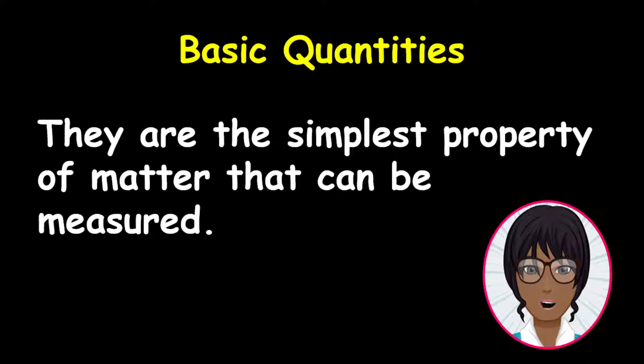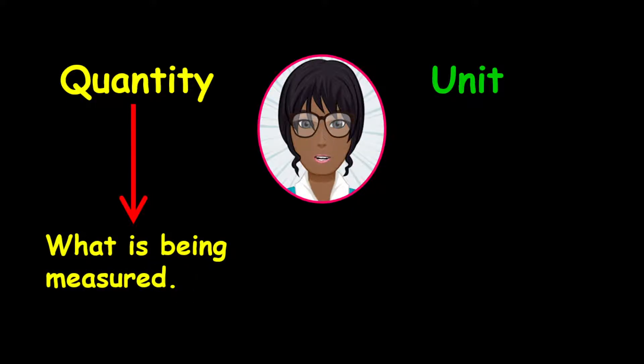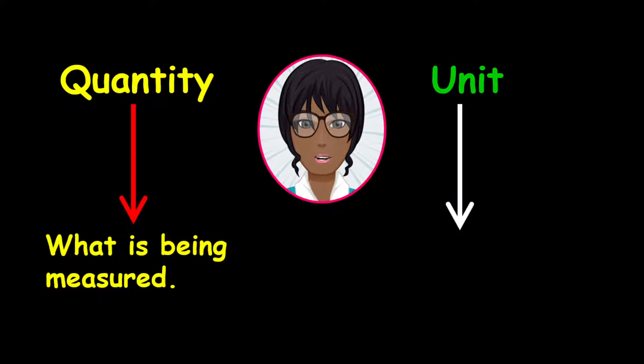Now for the summary of the distinction. Quantity: the quantity is what is being measured. Remember it is a simple measurable property. On the other hand, the unit represents what is being measured.